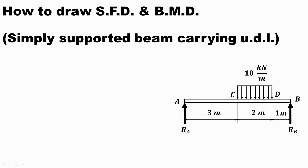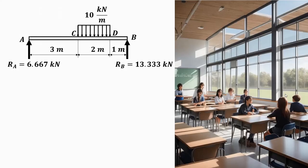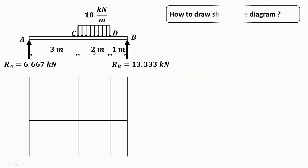In this video we will see how to draw the shear force diagram and bending moment diagram in case of a simply supported beam as shown in the figure. The reactions Ra and Rb have already been calculated in the previous video — a link is given in the description box. Ra is 6.667 kN and Rb is 13.333 kN, and the UDL is 10 kilonewton per meter acting over a 2 meter length.